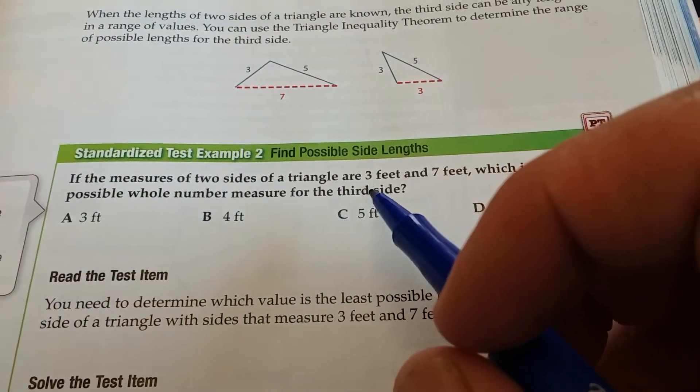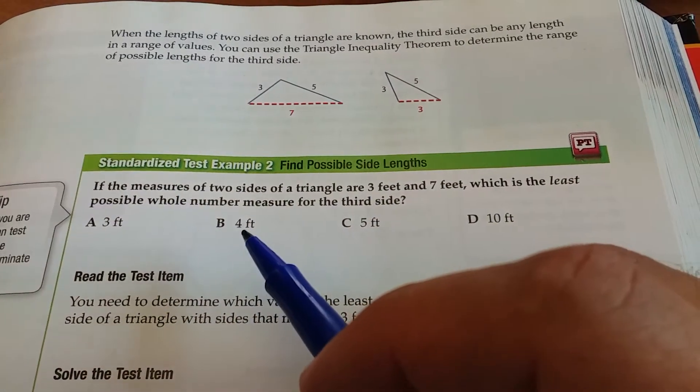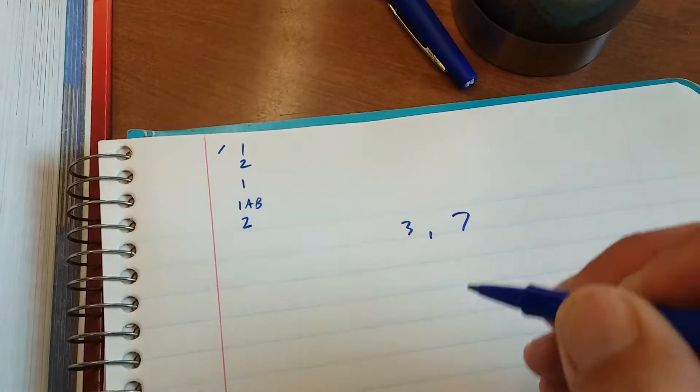If the measures of two sides of a triangle are three and seven, what is the least possible number for the third side? So we know that we have a side that is three and a side that is seven.